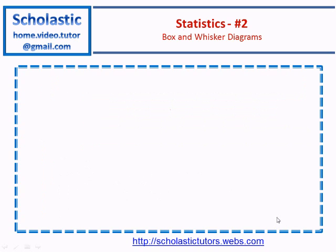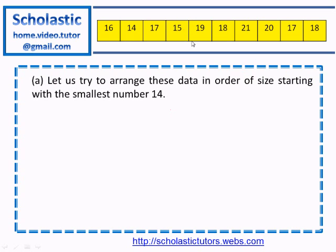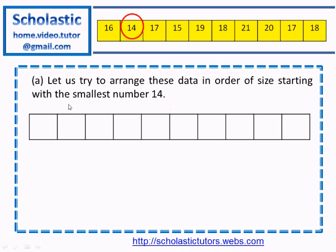Let's begin. What's given here are these numbers — the time taken to commute in minutes in random order. First, we should arrange this data in order of size starting with the smallest number, which is 14 in this case. We'll draw a blank table and fill in the numbers starting with the lowest number, 14.